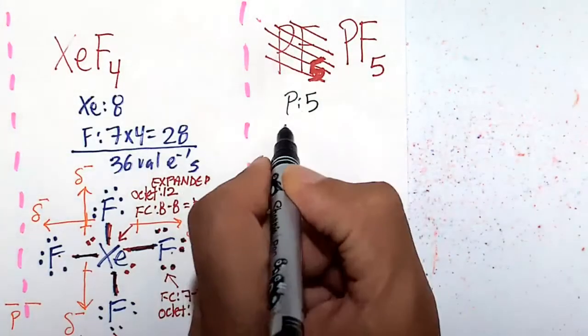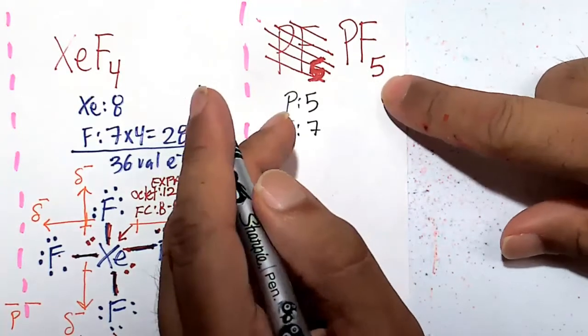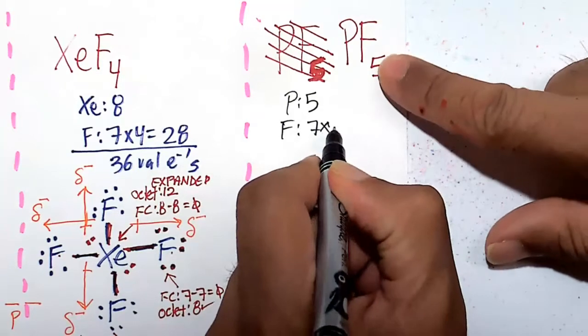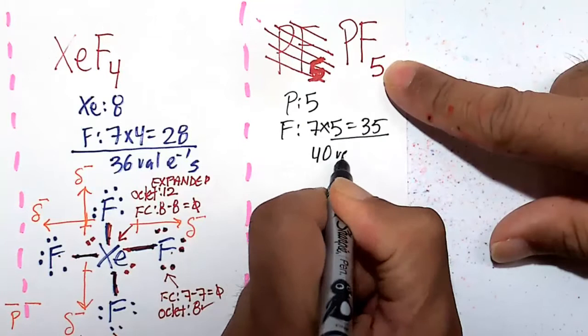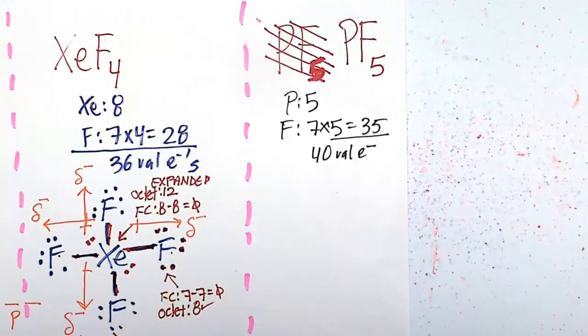Fluorine, as with all the halogens, are happy at 7. So chlorine, bromine, iodine, happy at 7. So happy at 7, but we don't have one fluorine. We have 5 fluorines. So our goal is to get 40 valence electrons around the PF5 molecule.